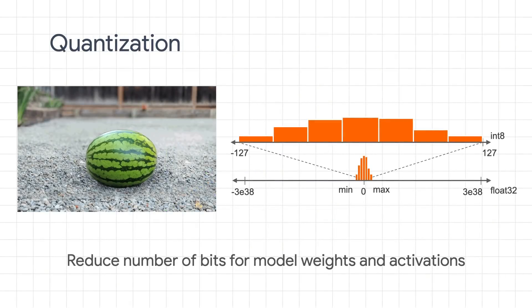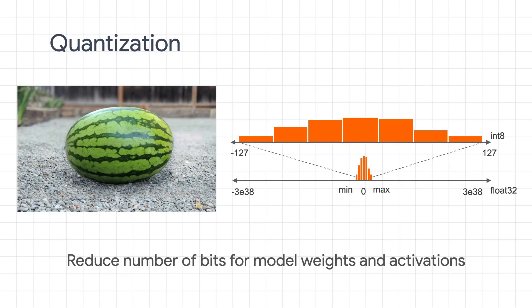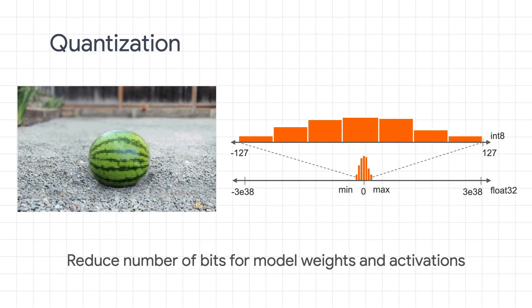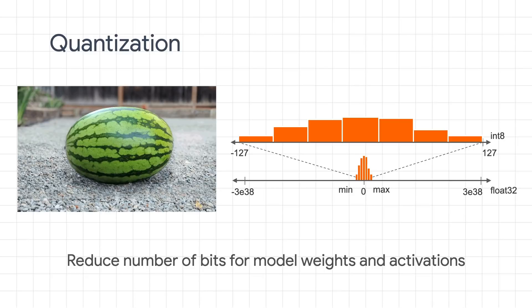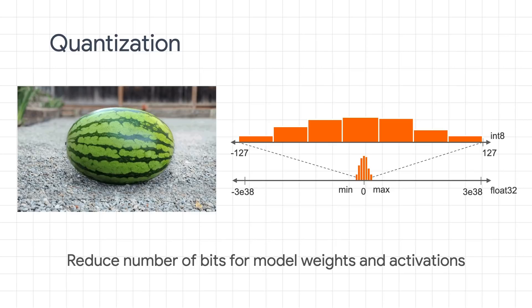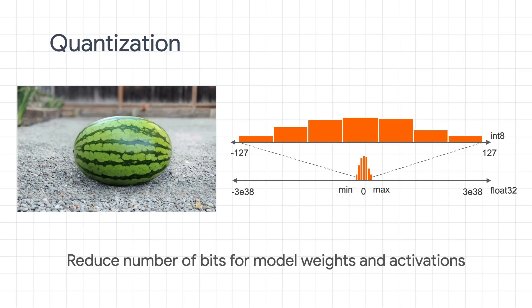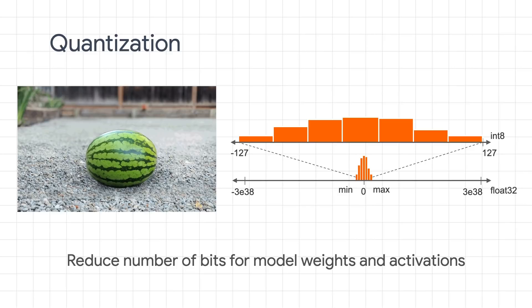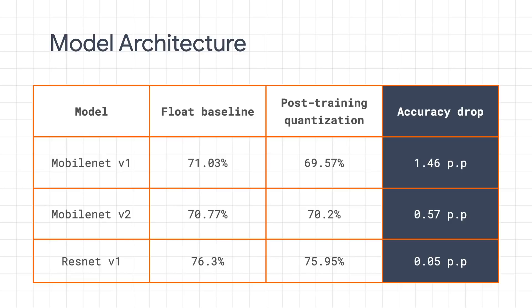The second optimization method is quantization. When building and training a model, it's common to use 32-bit float types to store model weights. However, when running inference, even if these 32-bit float weights are approximated to 8-bit integers, the model doesn't lose much accuracy. Quantization is the act of approximating your model weights with lower-bit representation — your integer-quantized model becomes 4 times smaller and also runs faster. The accuracy drop for popular architectures is around 1 percentage point, which is very acceptable.